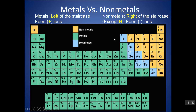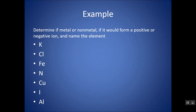On your periodic table, you have a bold staircase. Metals are on the left of the staircase — notice there are far more metals than non-metals. The left of the staircase is metals, except for hydrogen, which is a non-metal. The right of the staircase is non-metals. Along this bold staircase, you have metalloids that have properties of both. The metals form positive ions — they lose electrons. Non-metals form negative ions — they gain electrons.